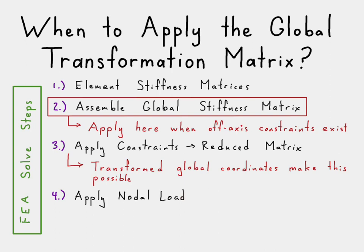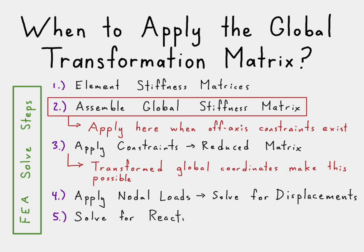Once we do that, we can go through the other three steps: applying the nodal load, solving for the displacements — keep in mind those displacements are going to be in this transformed coordinate system — solving for the reactions, and solving for the elemental results. So the critical steps are step two, assembling the global stiffness matrix, and step three, applying the constraints to create the reduced matrix. That's when we need to apply that global transformation matrix.